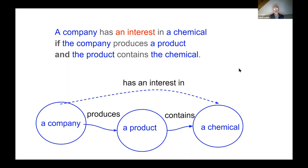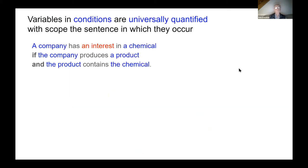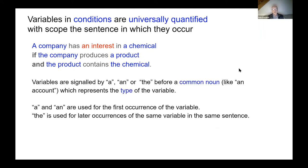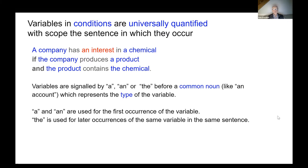Why is 'an interest' in red? The natural English reading does not have a variable for 'an interest', yet it is introduced as a type of object introduced by 'an'. I'll be arguing that 'an interest' is a hidden existential quantifier. Otherwise, all variables in conditions are universally quantified, and their scope is the sentence in which they occur. Common nouns represent types: 'a' is used for the first occurrence and 'the' for later occurrences.